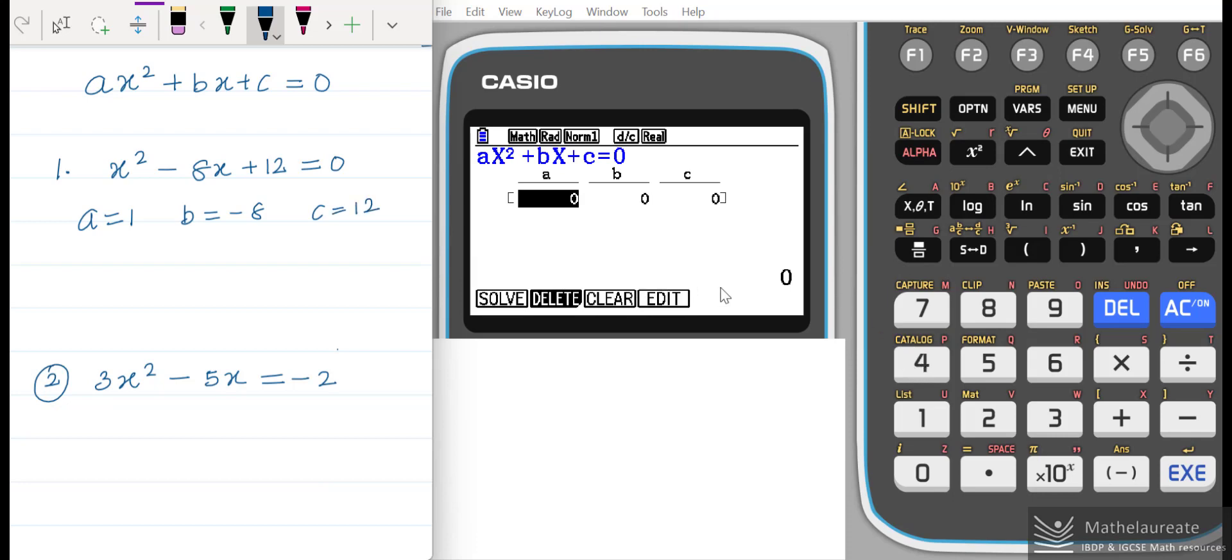Feed these values in the calculator. In the place of a you enter 1, in the place of b you enter negative 8, and in the place of c you enter 12. Press execute. You get the roots: the first root of this quadratic equation is 6, and the second root is 2.